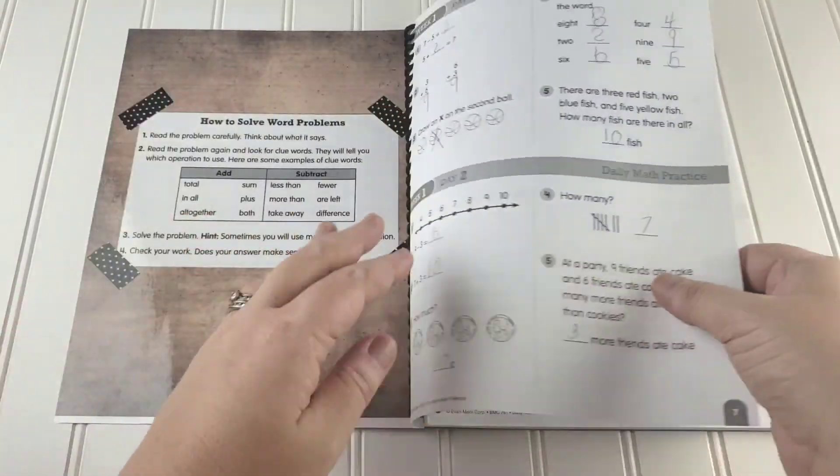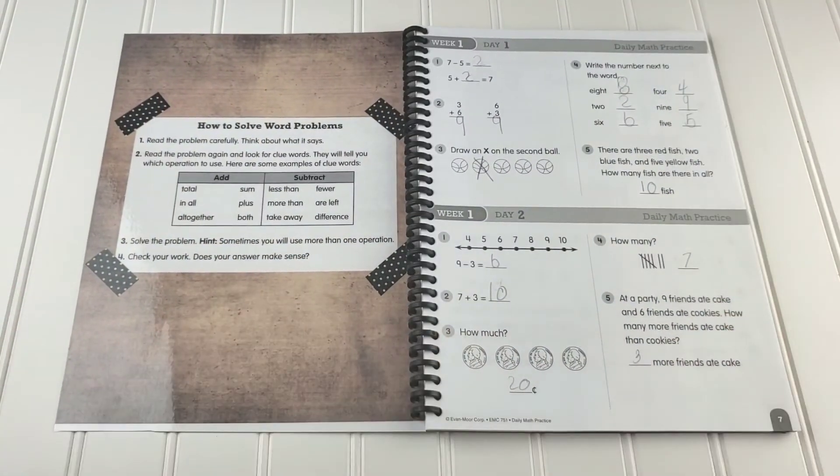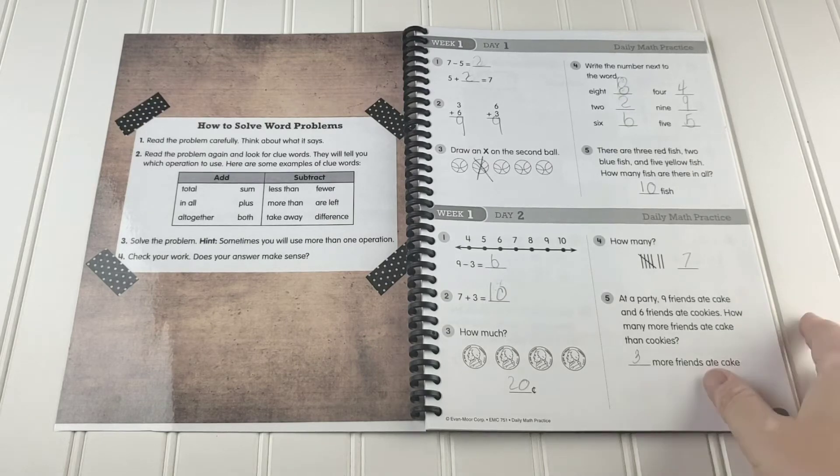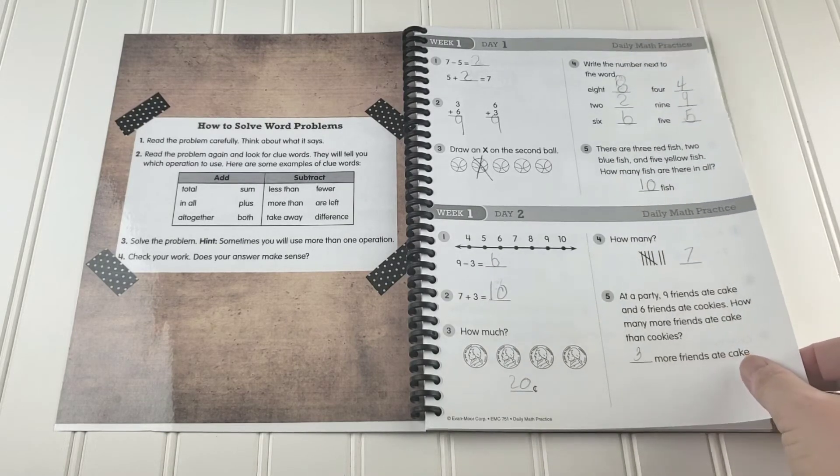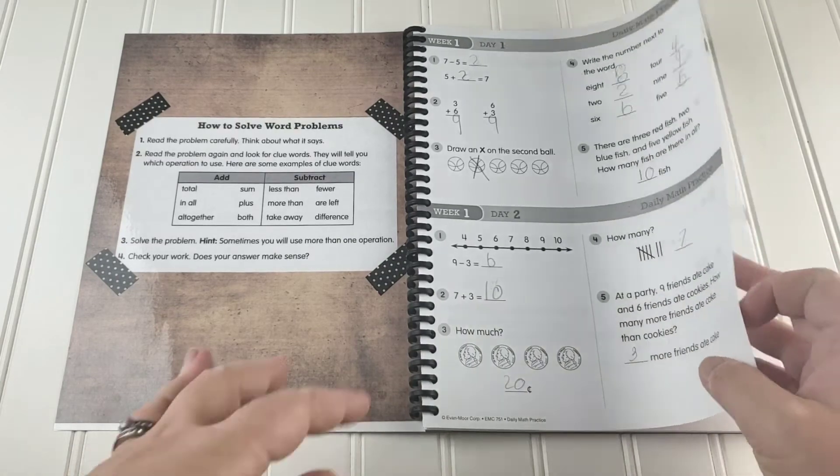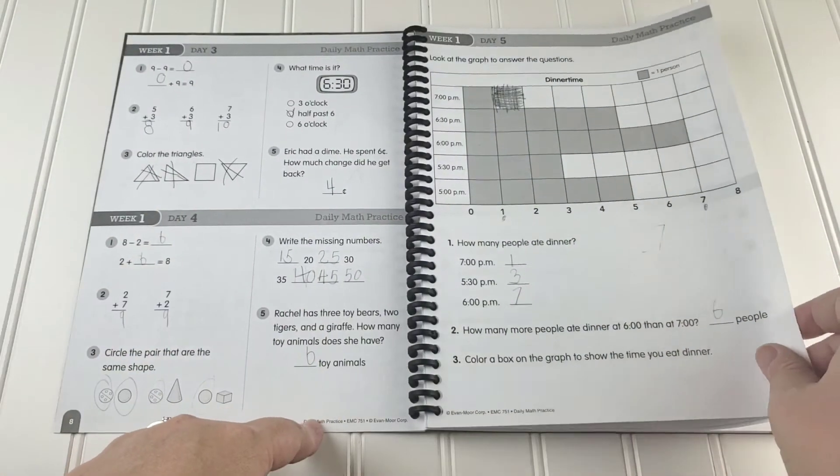She enjoys that she can do it primarily independently and she enjoys that she knows exactly what to do. It's simple. It's never something super complex. There's no prep work for her or for me. She can do this completely without me by just grabbing it, flipping to the next one and completing it.